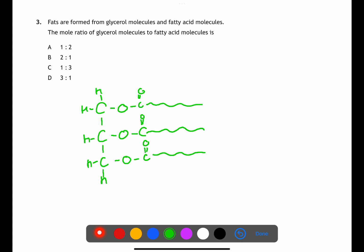This is a triol. It has three hydroxyl groups attached. This means that three fatty acid groups can attach onto the glycerol. This makes the ratio of glycerol to fatty acids 1 to 3.